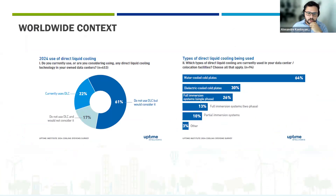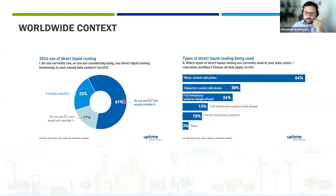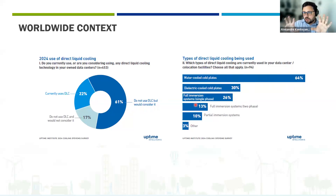First, let me give you some context. This is an Uptime Institute survey asking about liquid cooling. Of all persons questioned about DLC — direct liquid on chip — 22% currently use DLC, and 61% do not use it but would consider it. If you do the math, 83% are thinking about liquid cooling, which is a pretty huge number. Most data centers are using DLC, though immersion cooling is also used.